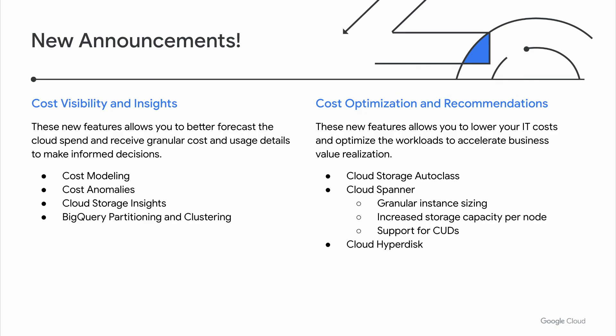On the cost optimization and recommendation side, we are introducing AutoClass, a new managed service for cloud storage. AutoClass is a simple bucket-level setting that automates the lifecycle management of objects. It greatly reduces storage costs by automatically migrating objects between warmer storage and colder storage with the most favorable pricing.